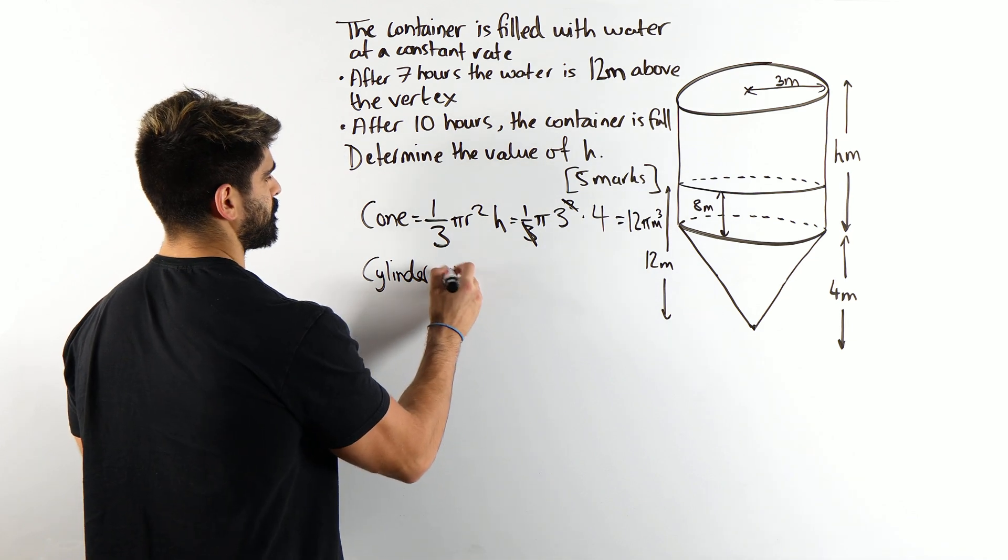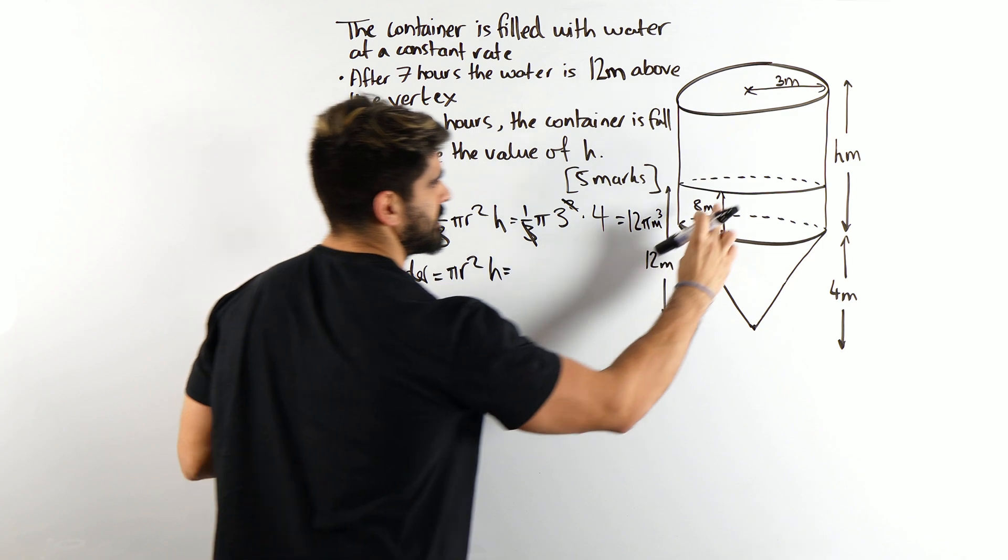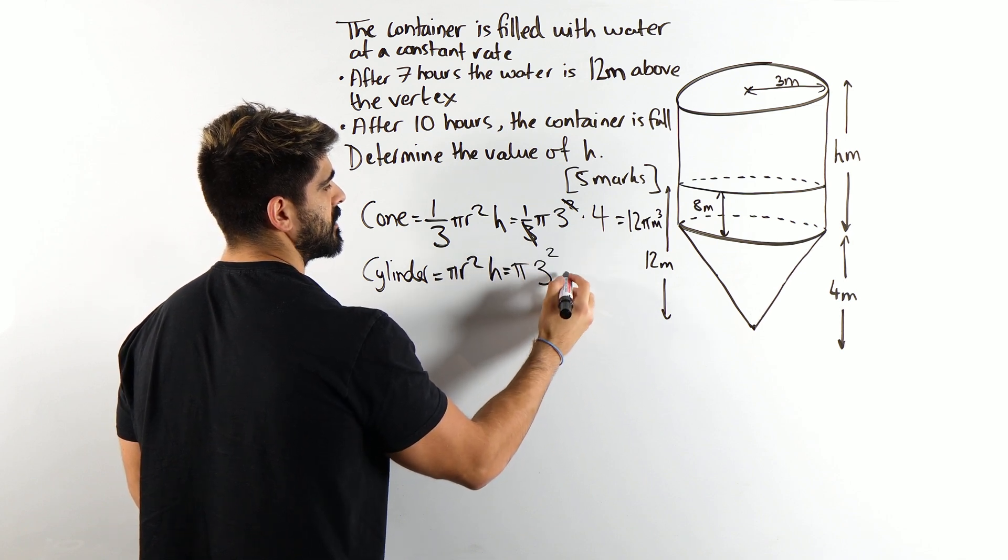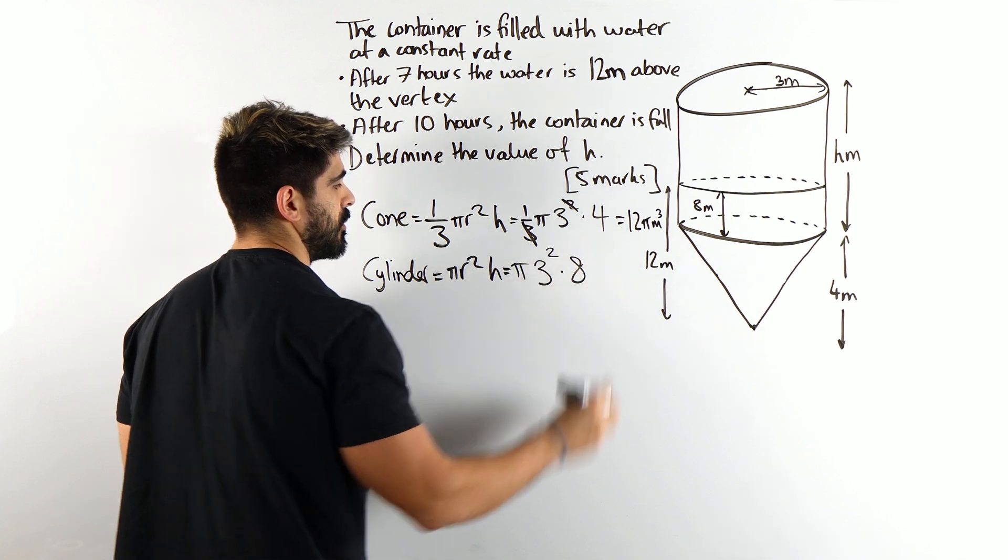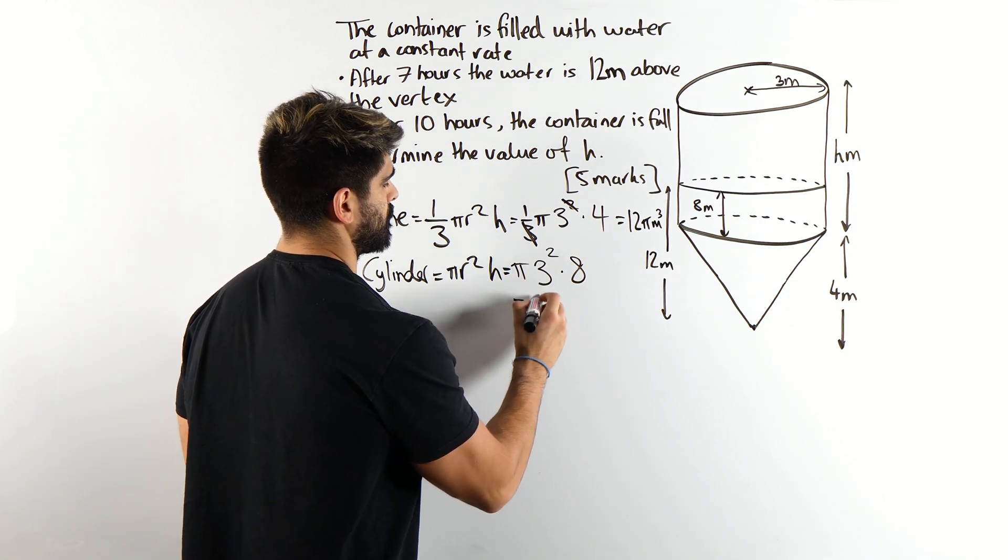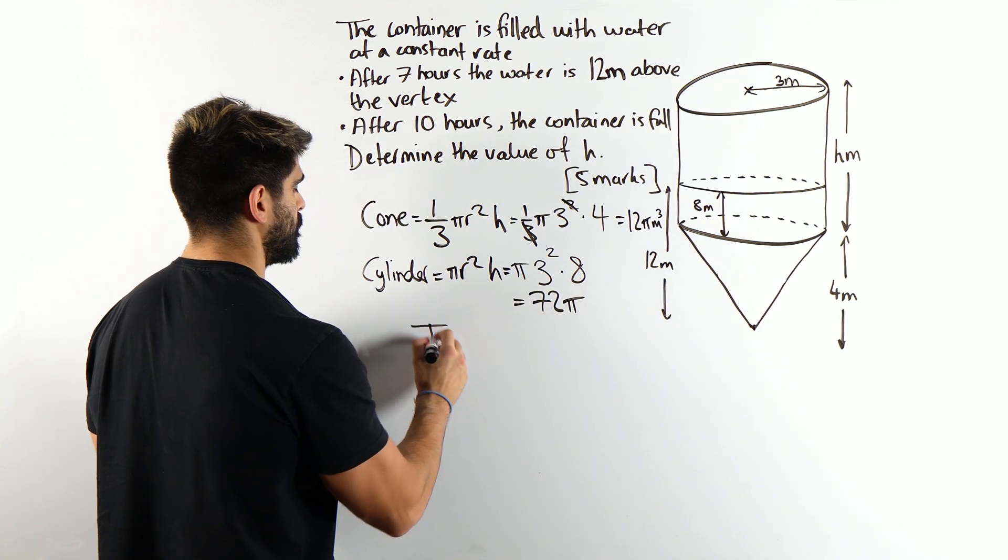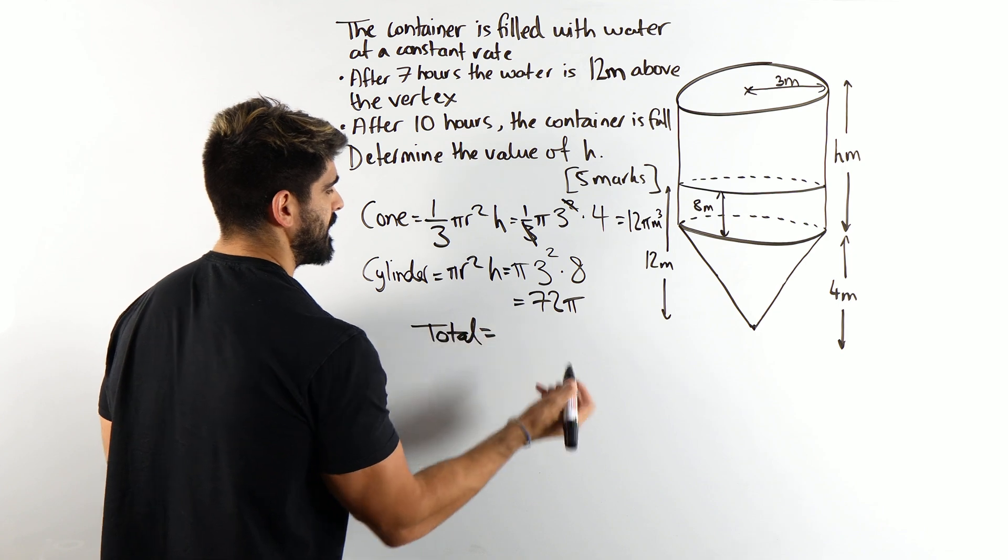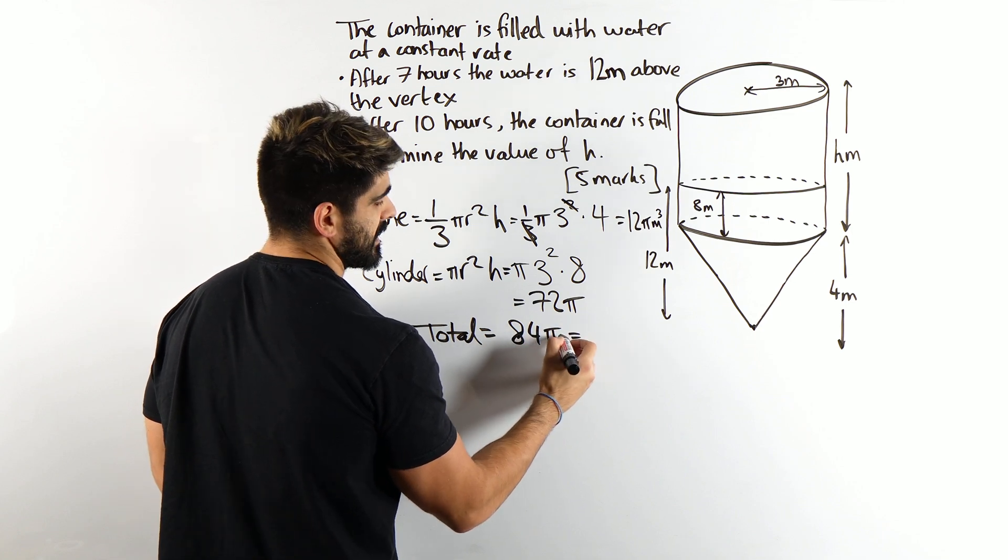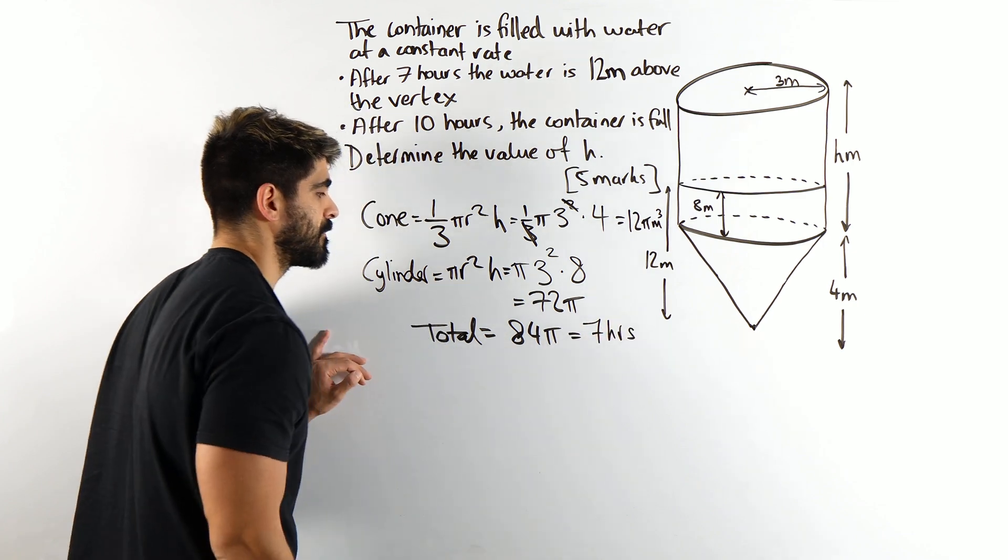But in our case, the height is 8. It's pi times the radius, which is 3 squared, times the height of 8. Nothing cancels here. We have 9 times 8 is 72. So the total volume that was filled up in seven hours is this plus this, 84 pi meters cubed.